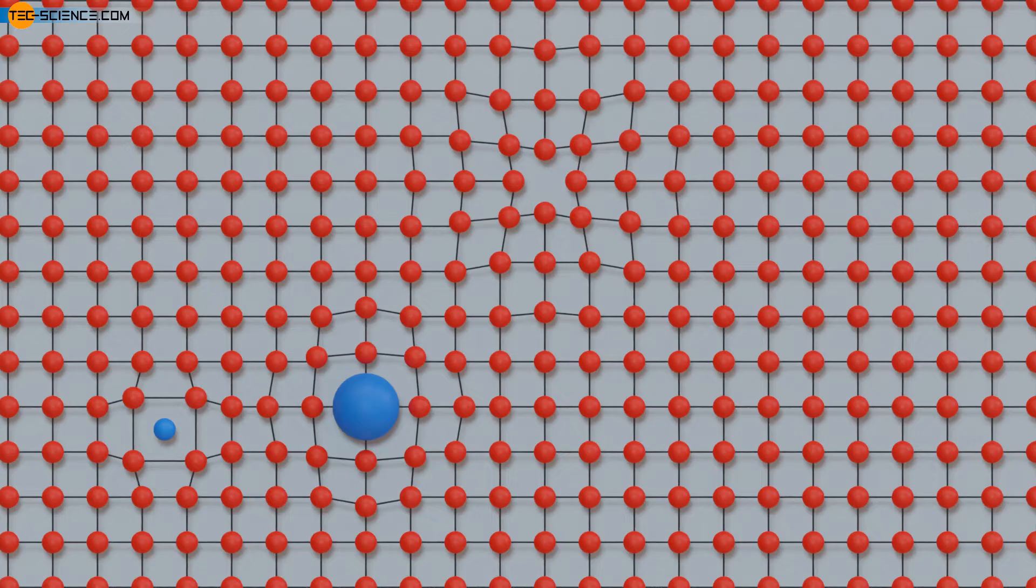Foreign atoms can diffuse through the material, particularly well due to lattice vibrations if there are many vacancies. There is then a lot of space available to move from one vacancy to the next. Vacancies therefore play an important role in diffusion processes of foreign atoms.